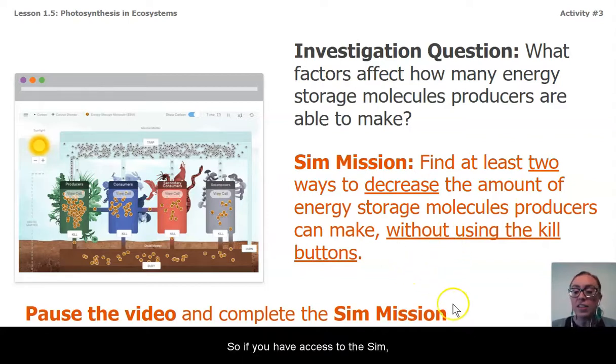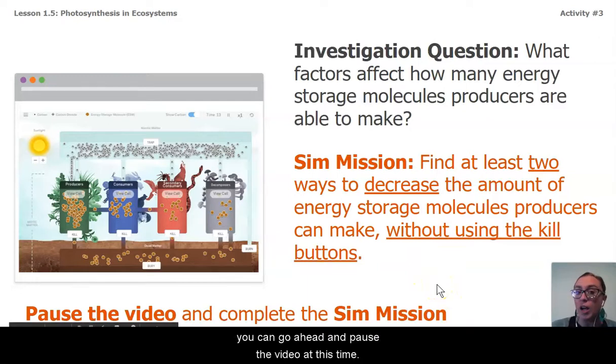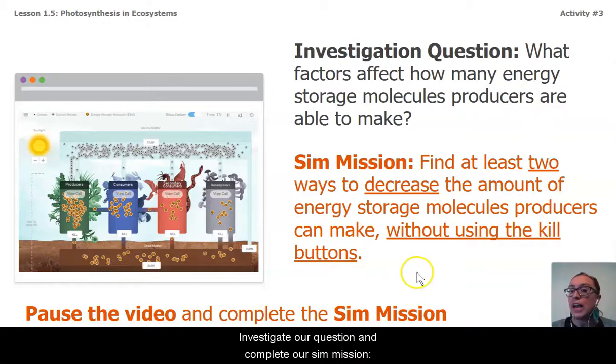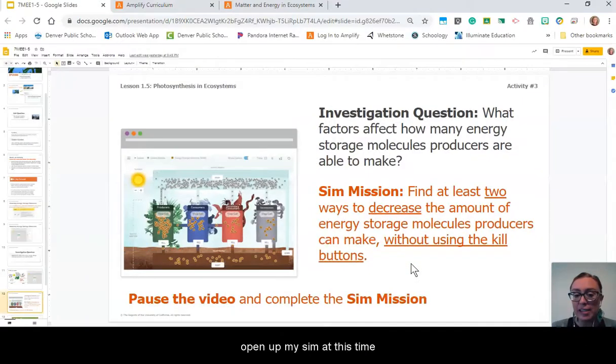If you have access to the sim, you can pause the video now, investigate the question, and complete the sim mission. What are two ways you could decrease the amount of energy storage molecules producers make without using the kill buttons? For those who don't have access to the sim or want to check your work, I'm going to open up my sim to do the same thing.